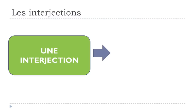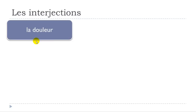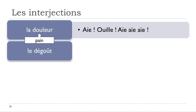LES INTERJECTIONS — an interjection can also be an onomatopée. We're talking about all those little sounds or words that people produce to express certain feelings. They are different in all languages. For LA DOULEUR — pain — in French you can say AIE, OUI, or AIE AIE AIE.